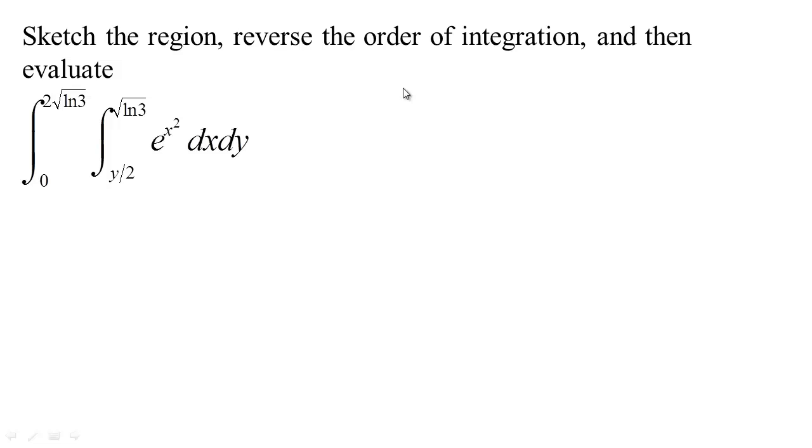Let's go ahead and just read off what these bounds are. The bounds are saying that y is between zero and two times the square root of the natural log of three and that given that y, the x value is between y over two and the square root of the natural log of three. So our region, here's the line y equals zero, it's just the x axis.